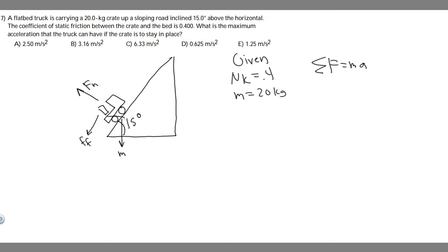For this problem, we're obviously going to have to draw what's going on. So we have this crate and this truck, and we know it's going up a slope 15 degrees. We know the coefficient of kinetic friction is 0.4. The mass of this crate is 20 kg.